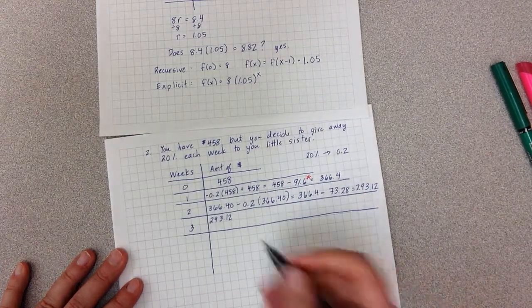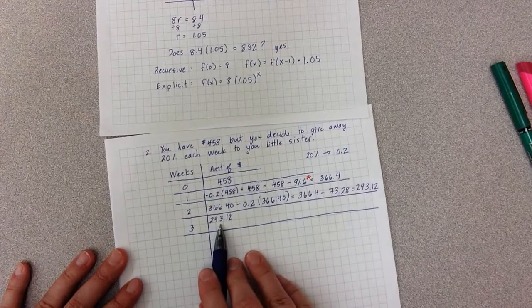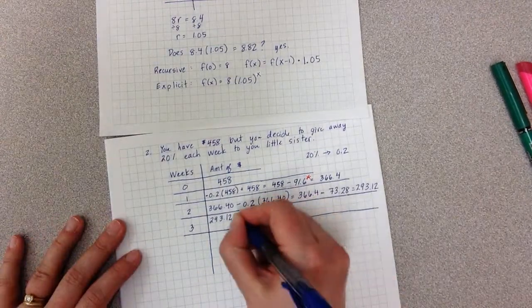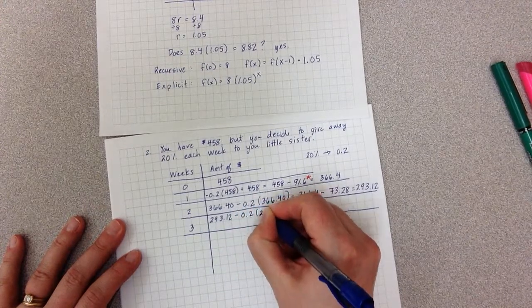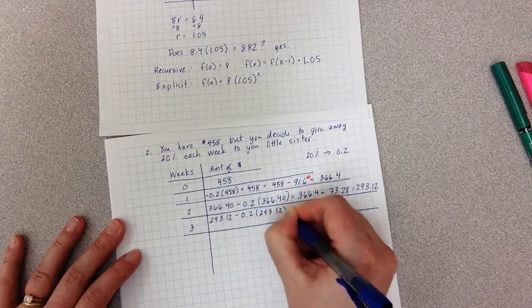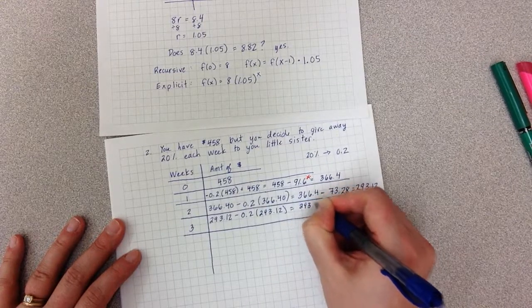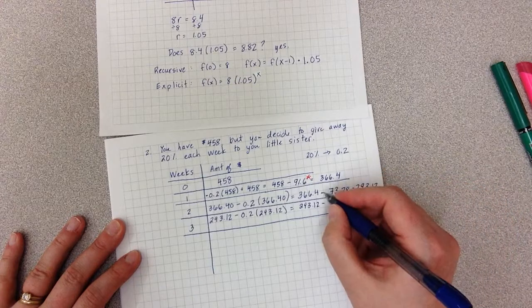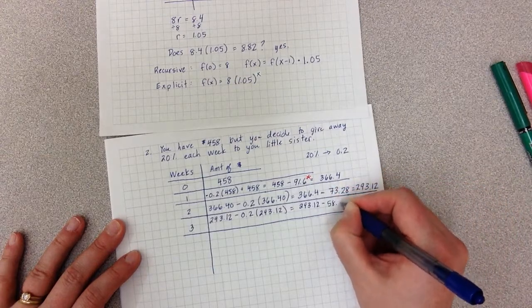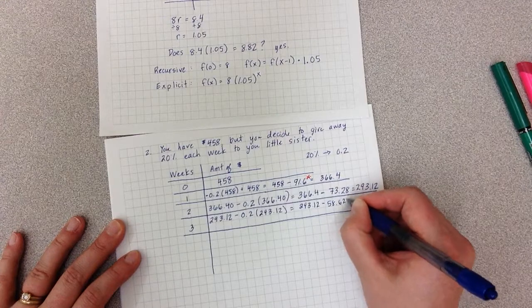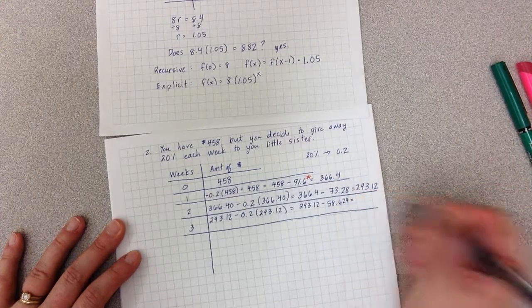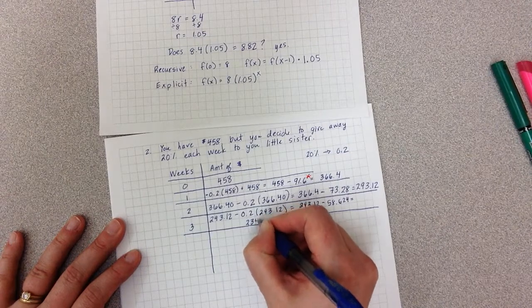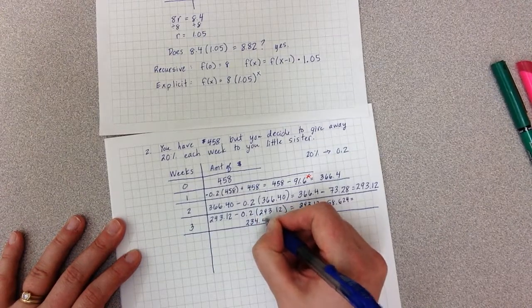Now I'm going to continue that process. I start with $293.12 on week three, and I'm going to hand my sister 20% of that. So I have 293.12 and I'm going to hand my sister $58.62 and a little bit more this week, which leaves me with $234.49.